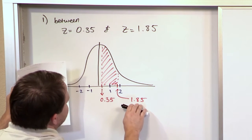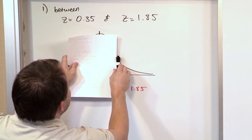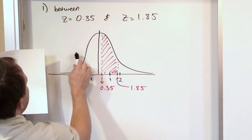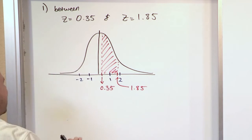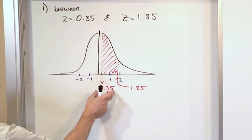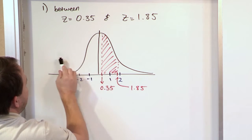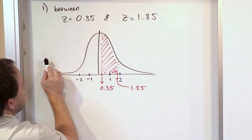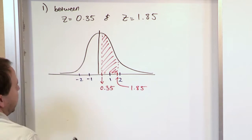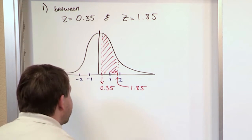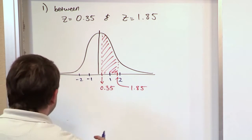If you just look up z = 1.85 in the chart, the answer you get is the area under the curve all the way from negative infinity to that value — that's a big number. If you subtract from that the table answer for z = 0.35, which gives the area from negative infinity to 0.35, you're left with just the area between them.